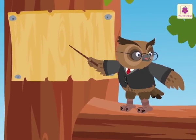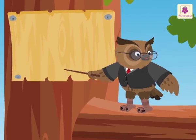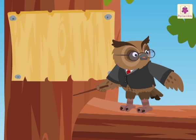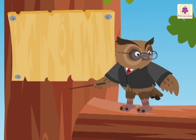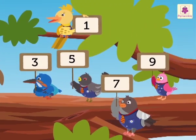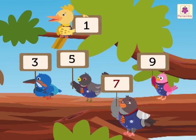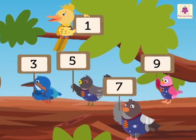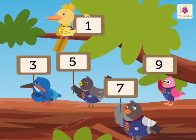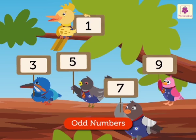Now, let us understand the meaning of odd numbers. All numbers with the digits 1, 3, 5, 7, or 9 in the 1's place are called odd numbers.